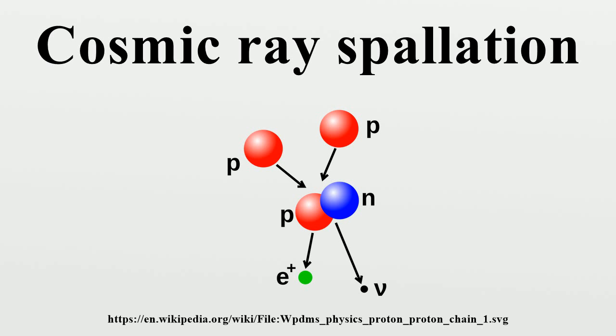In formation of a cosmogenic nuclide, a cosmic ray interacts with the nucleus of an in-situ solar system atom, causing cosmic ray spallation. These isotopes are produced within Earth materials such as rocks or soil, in Earth's atmosphere, and in extraterrestrial items such as meteorites. By measuring cosmogenic isotopes, scientists are able to gain insight into a range of geological and astronomical processes.